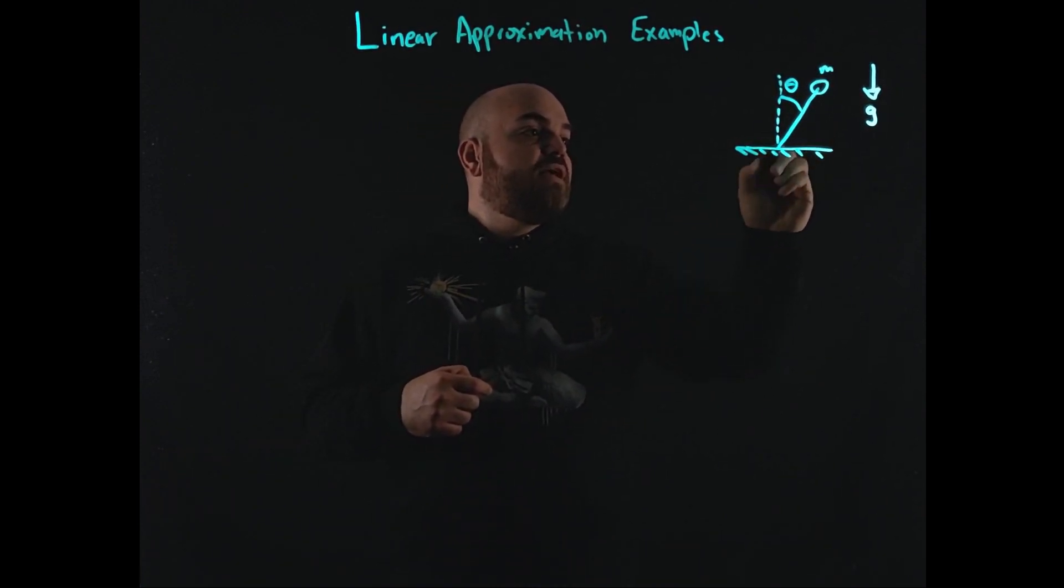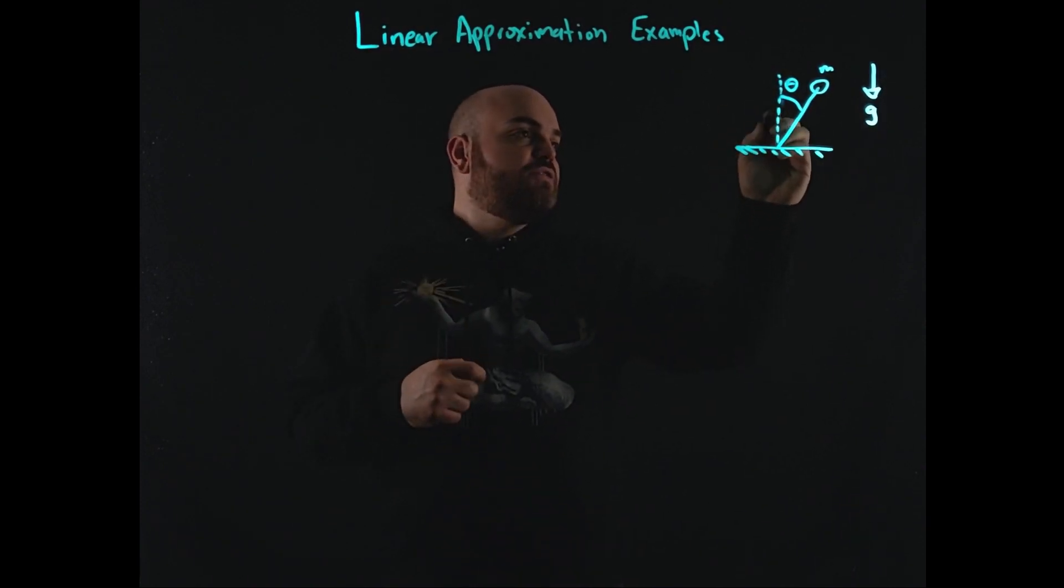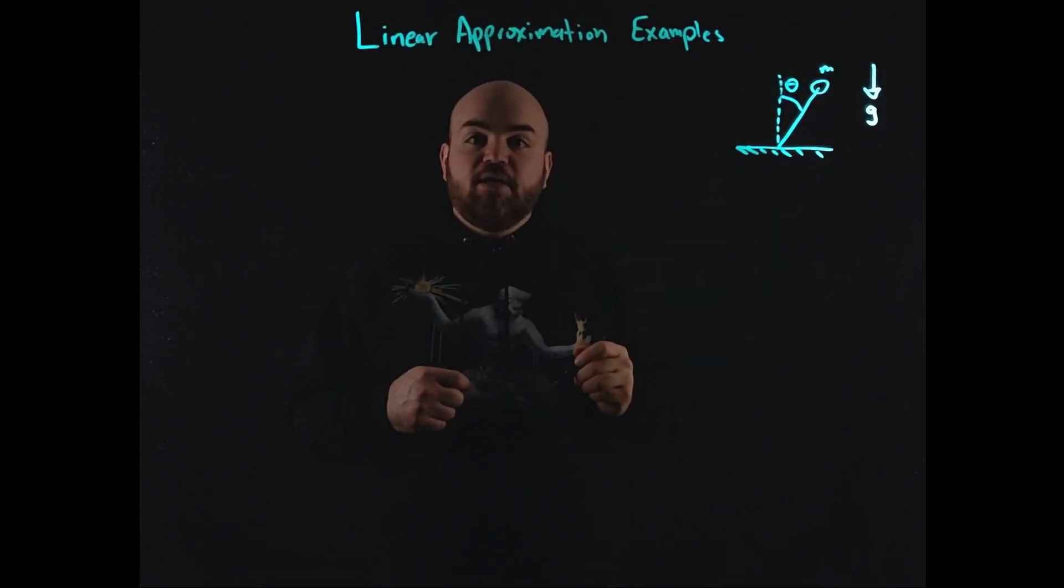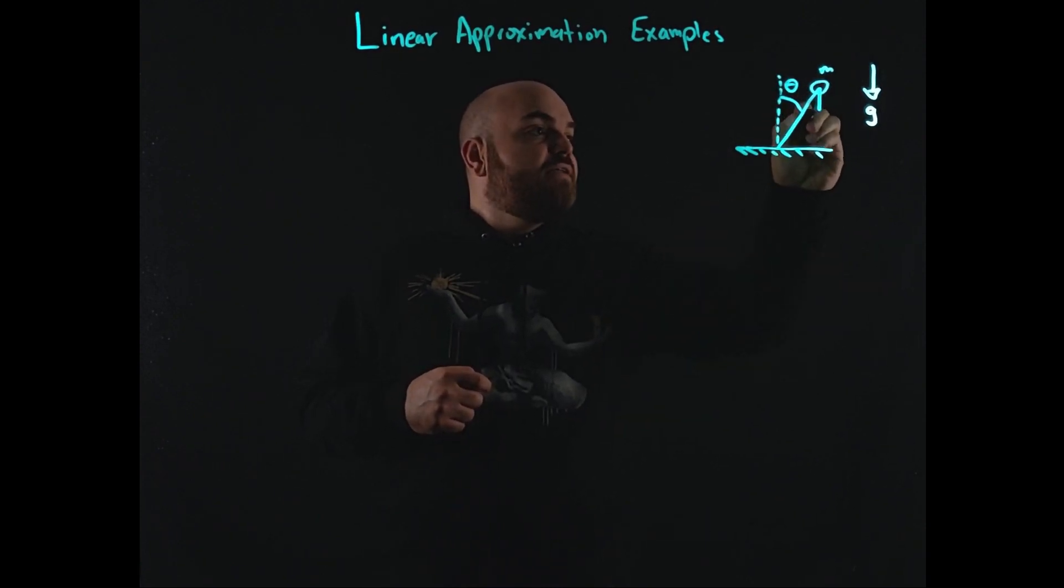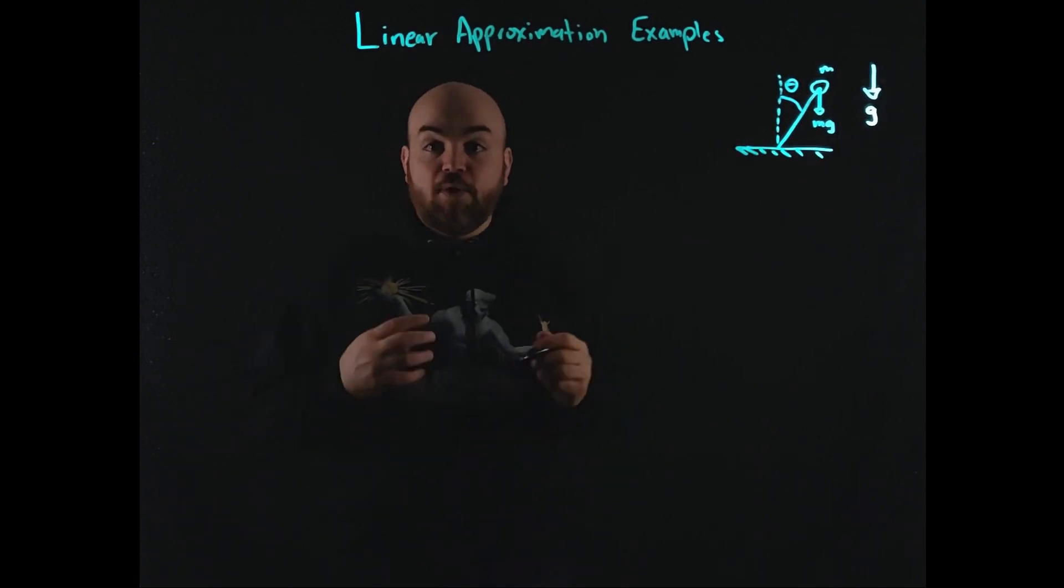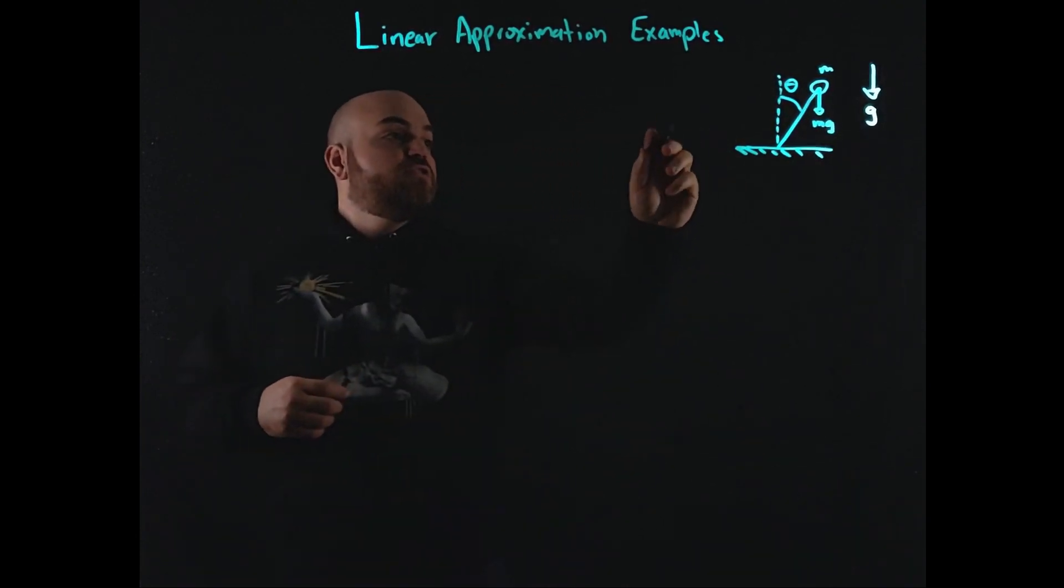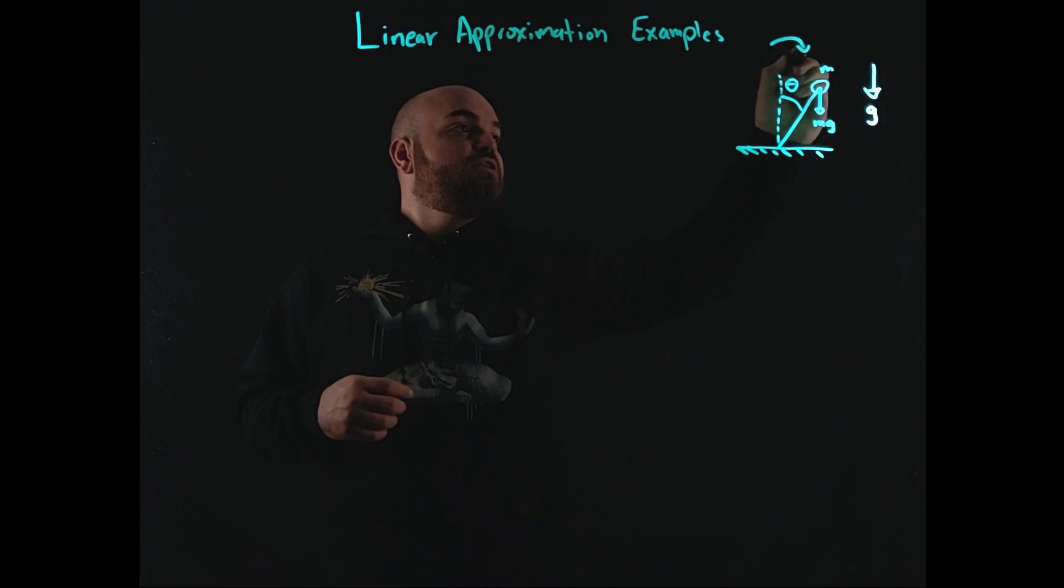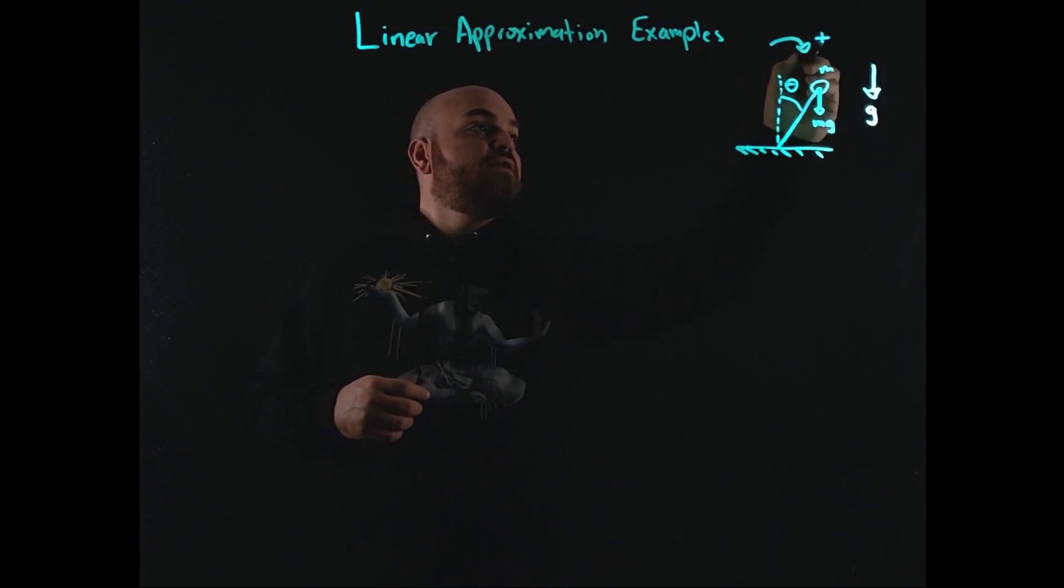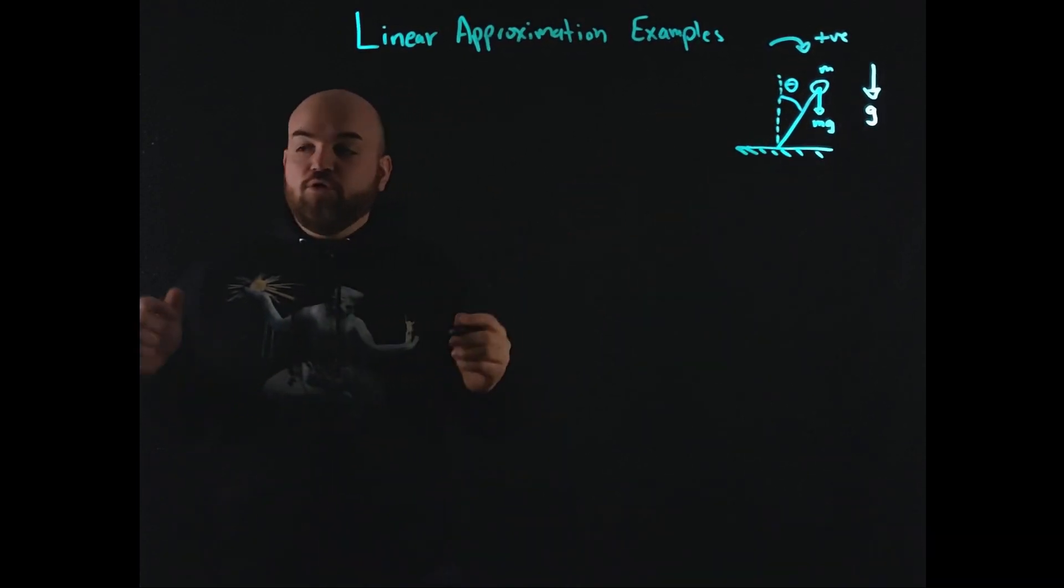So we have a mass here, m, connected to a string, or a rod, and it's massless. Again, some idealizations here. And there's this angle theta from the vertical, and there's a gravity effect here. So the first thing acting on the mass here is mass times g, so the weight essentially. And so let's say that the motion is positive clockwise, and let's write out the equation of motion for this.